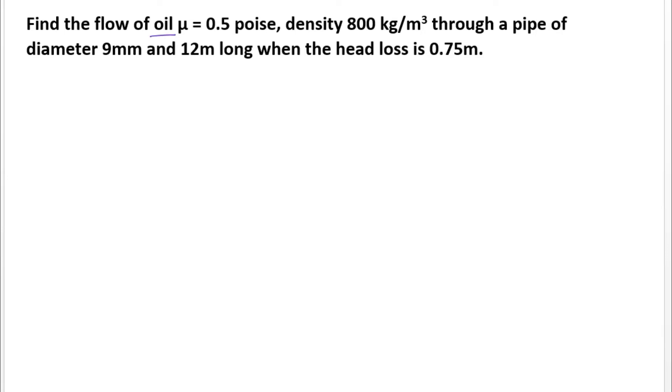The problem is: find the flow of oil if mu equals 0.5 poise, density equals 800 kg per meter cube, through a pipe of diameter 9 mm and 12 meter long when the head loss is 0.75 meter.